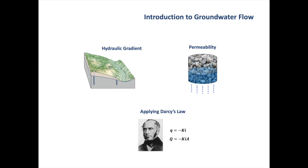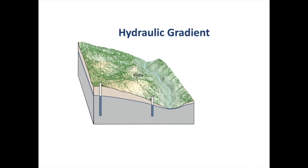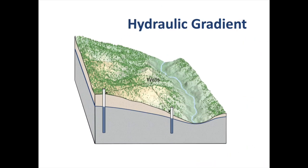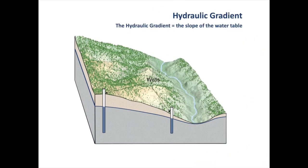Let's start with the hydraulic gradient. The hydraulic gradient is the slope of the water table. Like any slope, it is calculated by dividing the change in the water elevation by the horizontal distance.